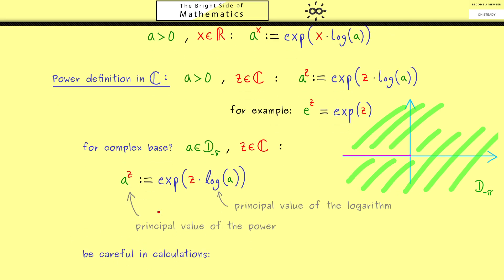However, I can immediately warn you: be careful in such calculations. Picking a principal value has consequences for our calculation rules. For example, you might know a power rule - a to the power z1 times a to the power z2 should be a to the power z1 plus z2. Indeed, the exponential function saves us, this still holds. This is a correct calculation rule you can use for the principal value of the power.